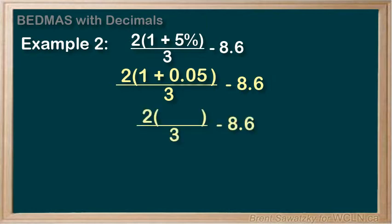Looking after the addition next. 1 plus 0.05 equals 1.05. And we're done with the brackets. Next, let's look after the multiplication here. 2 times 1.05 equals 2.1.